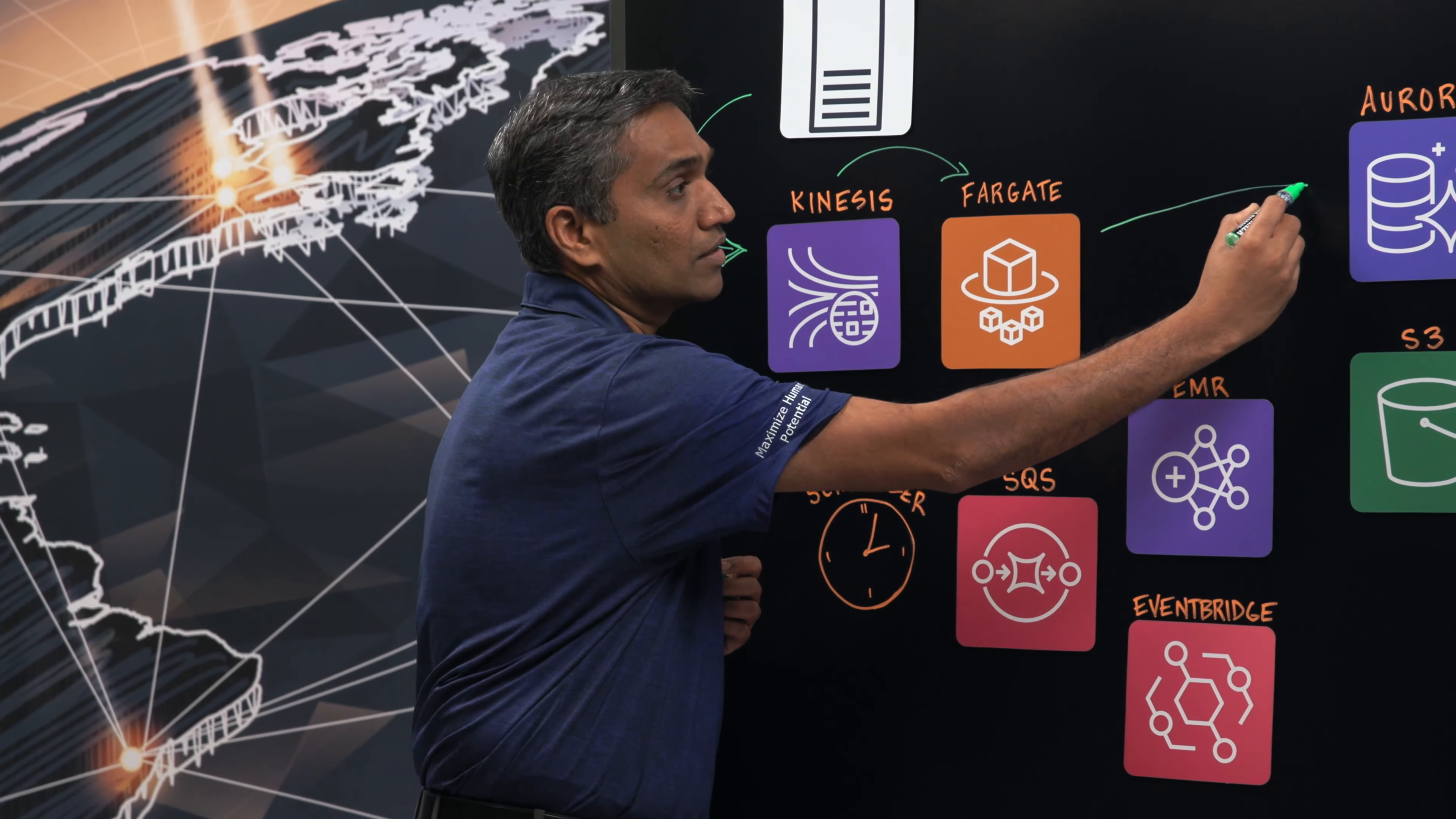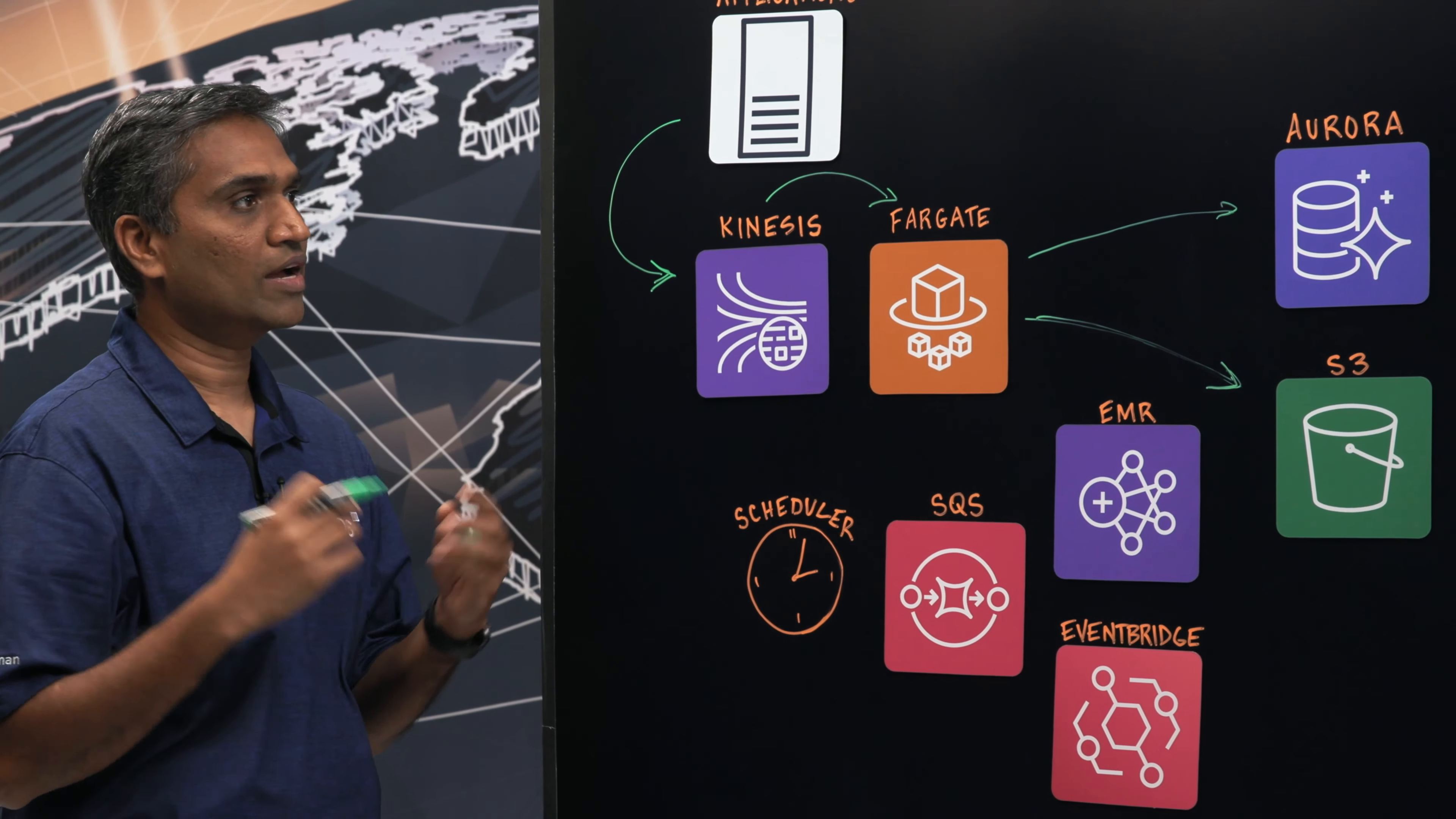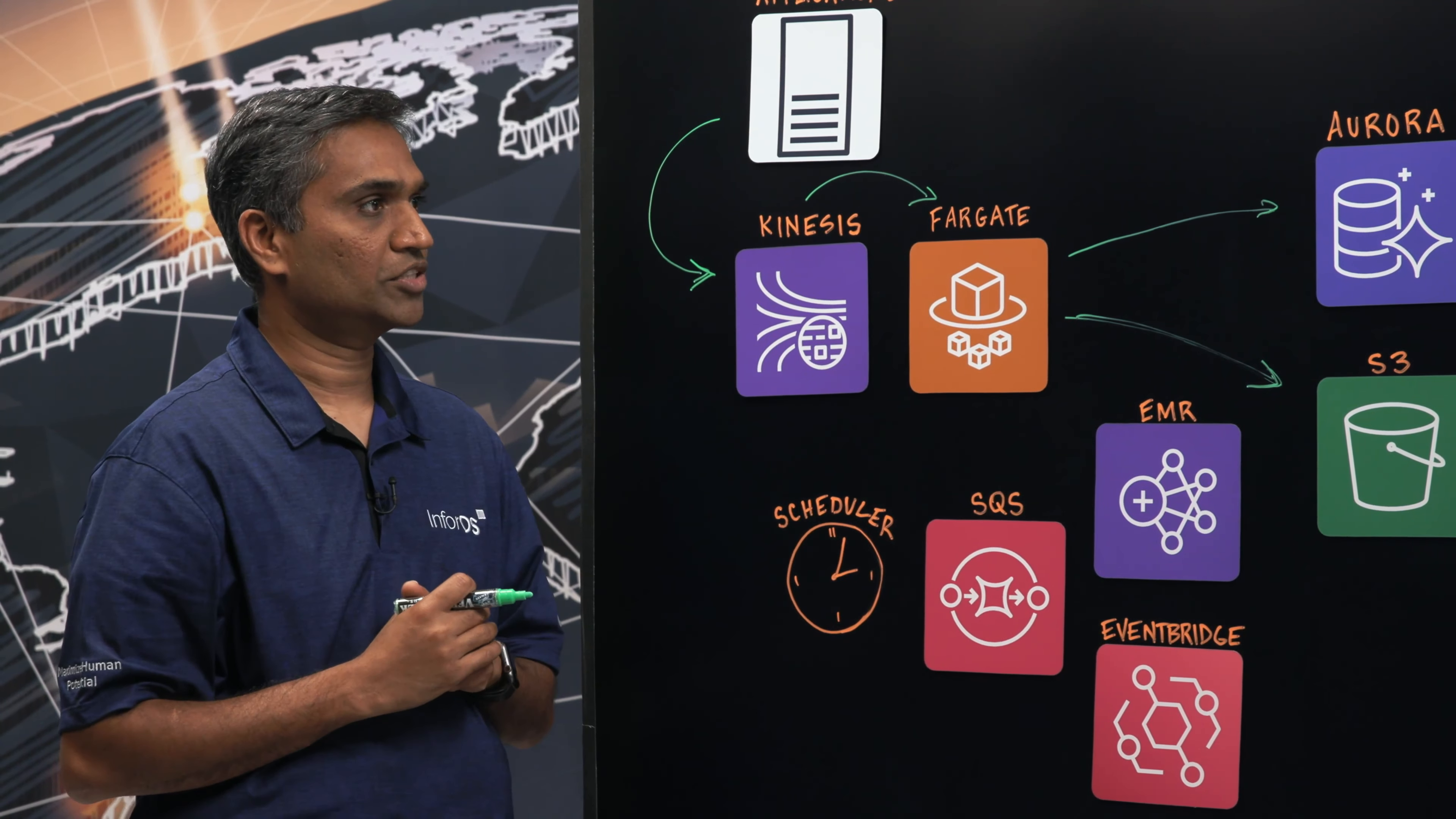stores the data in the Aurora database as well as the S3 buckets. And so once the data is stored in S3 buckets, we have scheduled Glue jobs that do the ETL transformation on the data and puts it back into S3 buckets.